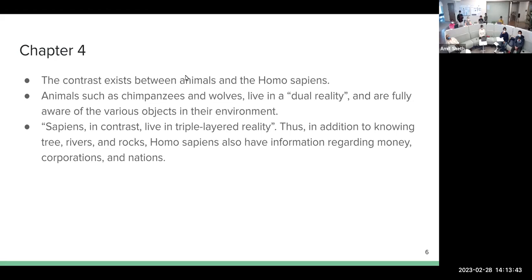Then in this chapter he specifically picks this example where he says that the animals live in a dual reality, whereas sapiens, again sapiens means humans, they live in a triple reality. So what this example he is trying to say is, animals can see the background or the environment in which there are trees, rivers, and rocks. So can humans.